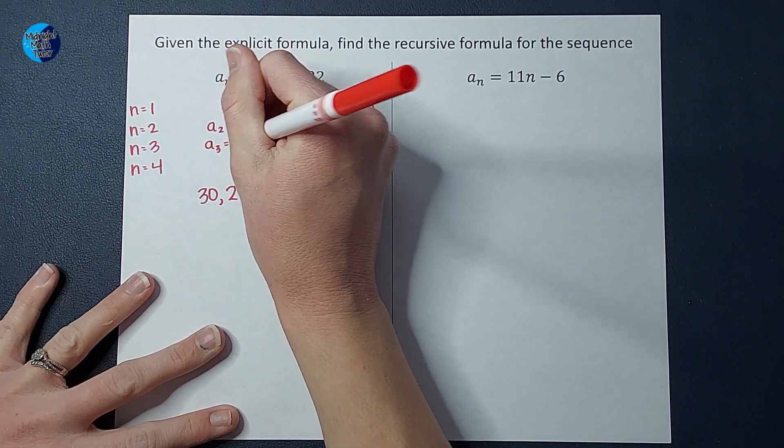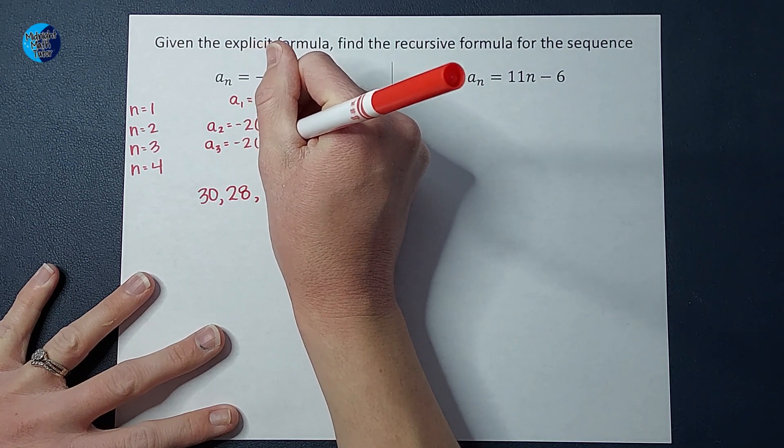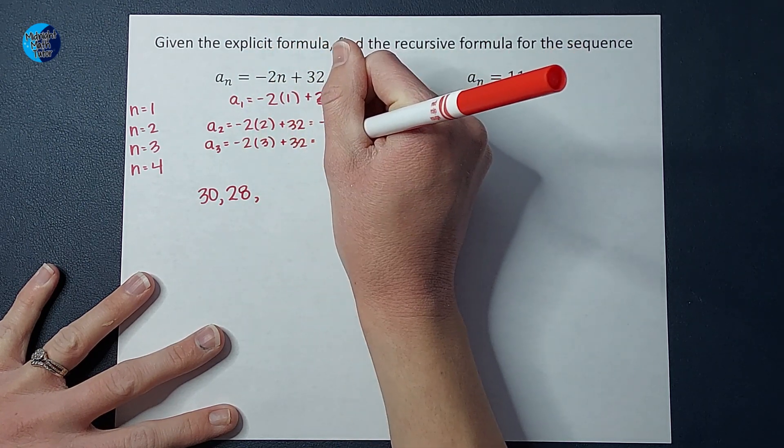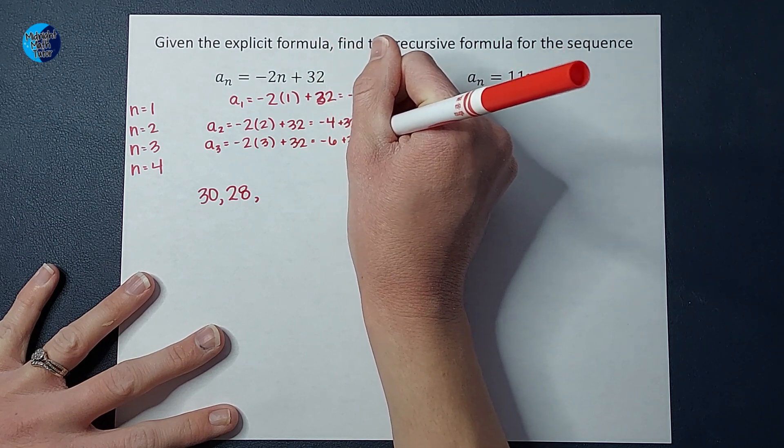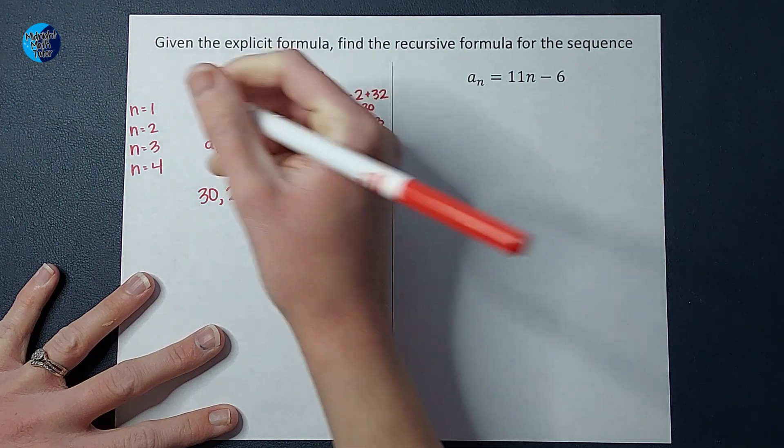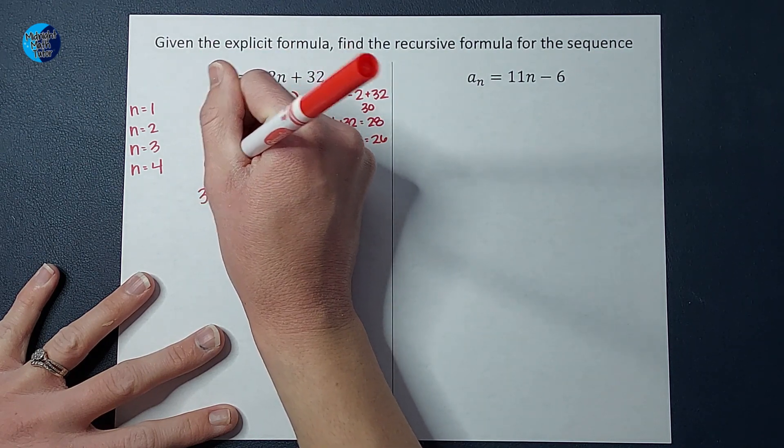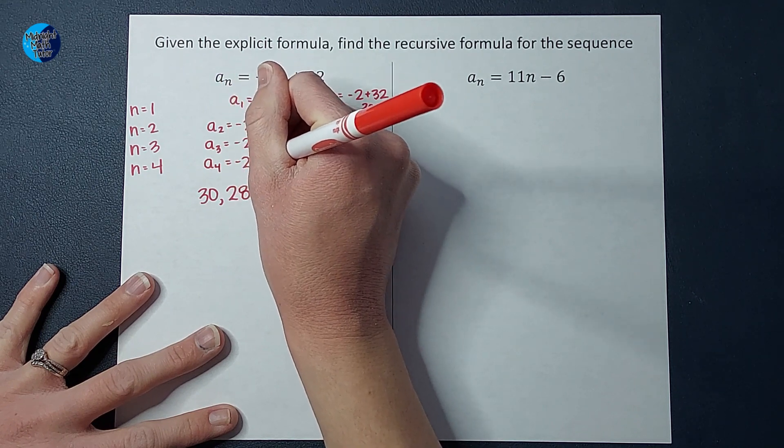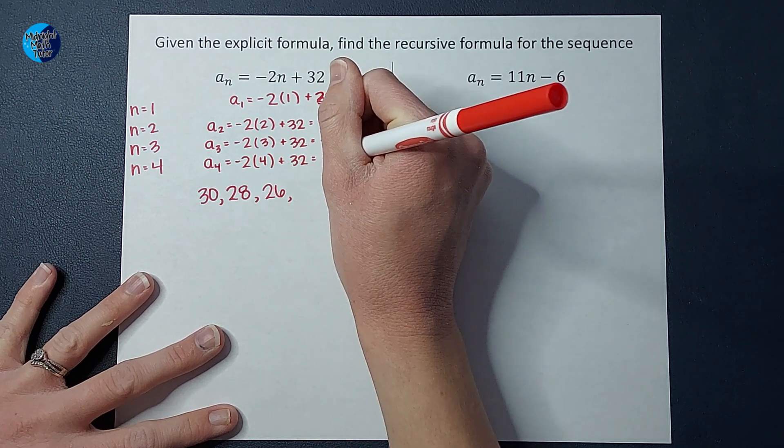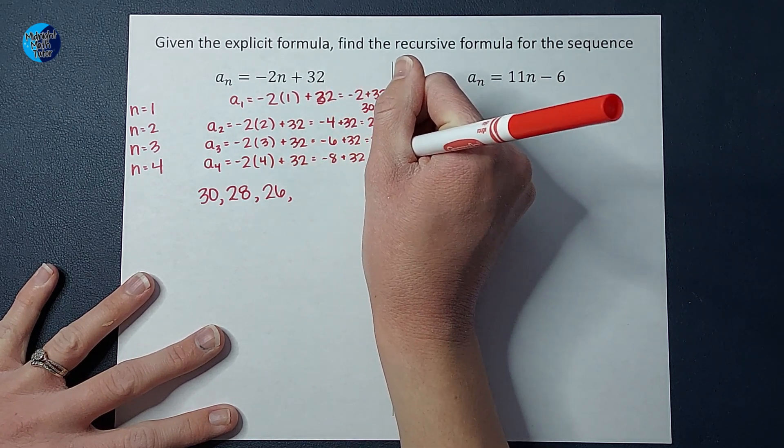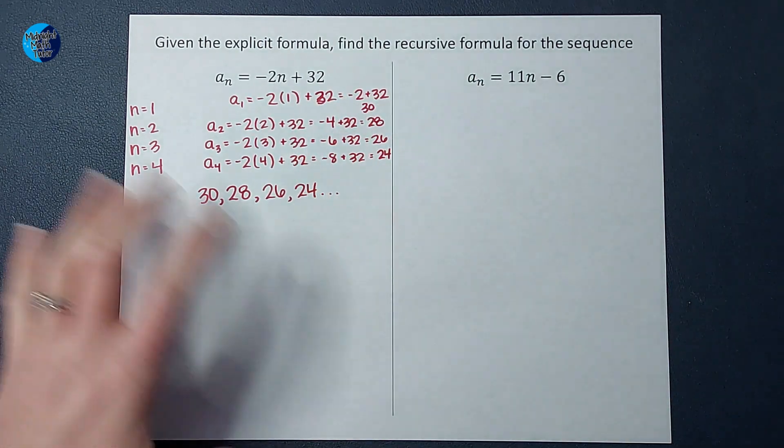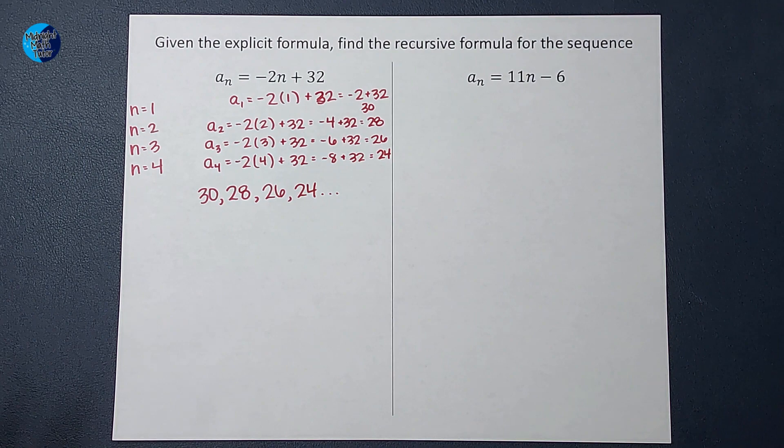So if I want to know the third one, I take negative two, multiply it by three, add 32. So I end up with negative six plus 32, which is 26. And then if I want to know the fourth term, I'm going to take negative two times it by four plus 32, which gives me negative eight plus 32, which gives me 24. Now this keeps going, right? I could plug in whatever number I wanted for n to figure that out.